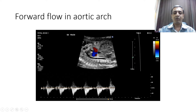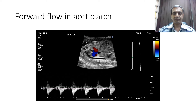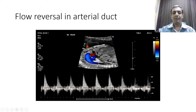This is a pulse wave Doppler image showing the forward flow in the aortic arch and the flow reversal in the arterial duct. I want to show you the change in direction of Doppler — in the aortic arch the flow is downward, away from the heart, while in the duct the flow is upward, indicating reversal.